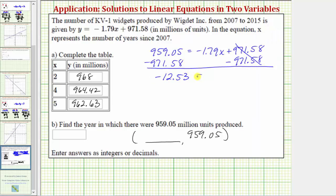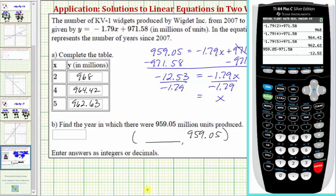So we have negative 12.53 equals negative 1.79x. The last step to solve for x is to divide by negative 1.79. The right simplifies to just x, dividing by negative 1.79 undoes the multiplying by negative 1.79 where this quotient equals one. One times x is x. And now let's find the quotient on the left. Negative 12.53 divided by negative 1.79.